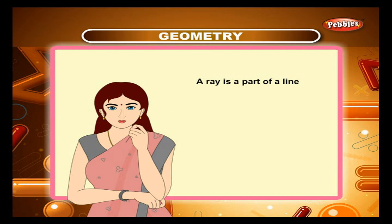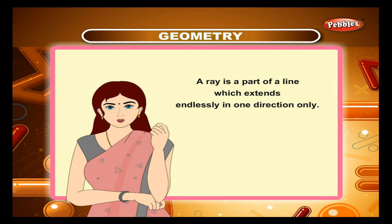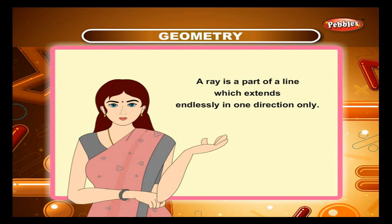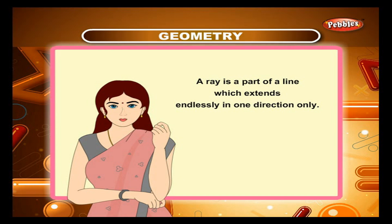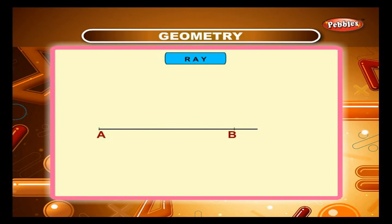Draw a line segment AB and extend it in one direction only. Put an arrow mark on that end. This represents a ray AB.